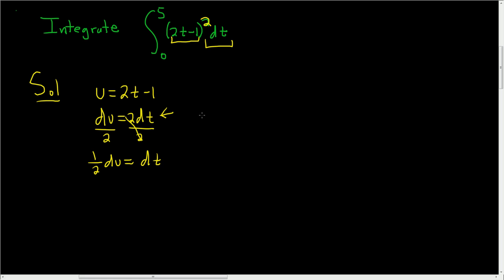Now we have to change the limits of integration. When x is equal to 0, that's the bottom limit of integration, lower limit, we can compute u. So u is equal to 2 times 0 minus 1, so u is negative 1. Likewise, when x is equal to 5, we can compute the upper limit of integration. That's 2 times 5 minus 1 equals 9.